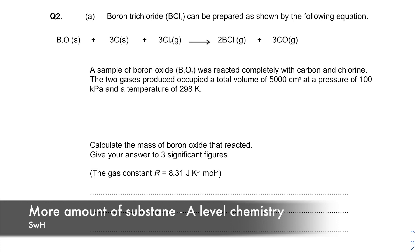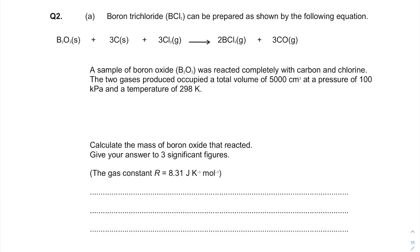Boron trichloride can be prepared as shown by the following equation. A sample of boron oxide was reacted completely with carbon and chlorine. The two gases produced occupy a total volume of 5,000 cm³ at a pressure of 100 kPa and a temperature of 298 K. Calculate the mass of boron oxide that reacted. Give your answer to three significant figures.